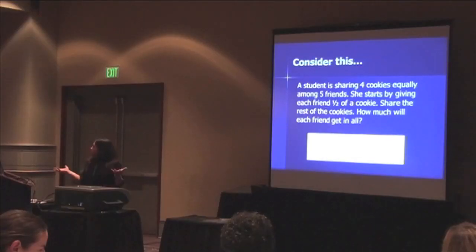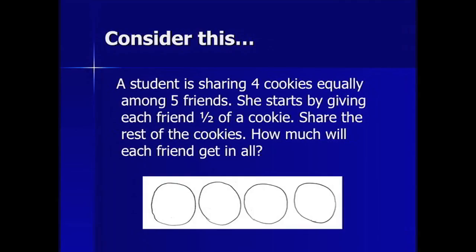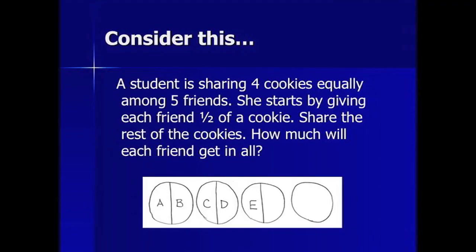So here's a fraction problem. You're going to solve it. We've got these four cookies that we want to share equally among five friends. We want to make sure that each friend gets the same amount of cookie. But the problem's been started for you, because this child started by giving each friend a half of the cookie. So now we have these four cookies that each have a half of the cookie given out — you need to share the rest. When we share this with teachers, we're using errors as springboards to change.